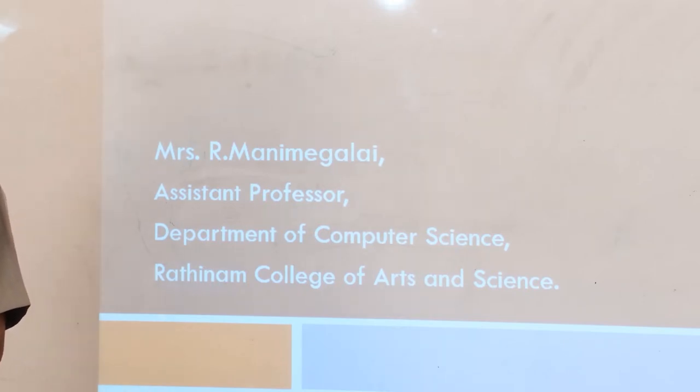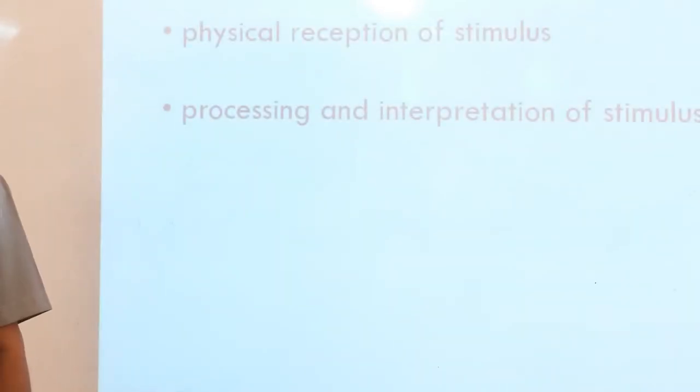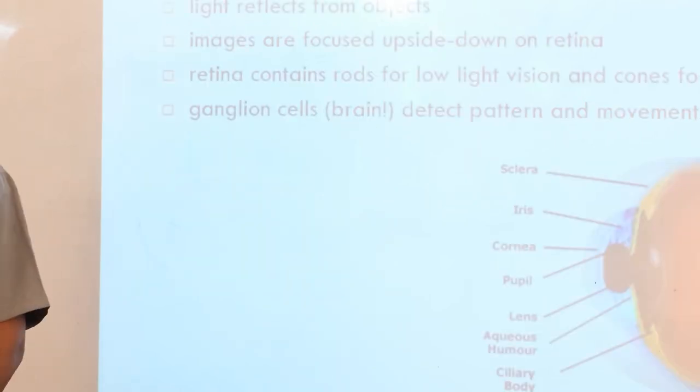First one is vision, hearing, touch and movement. So first we will see vision. Vision has two stages: one is physical reception of stimulus, and second is processing and interpretation of stimulus. The objectives of eye mechanism for physical reception is